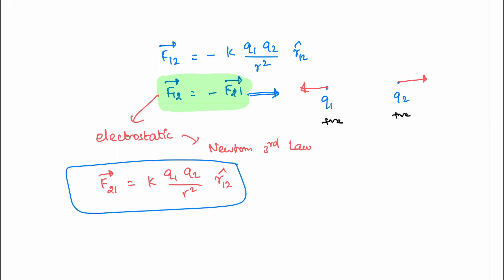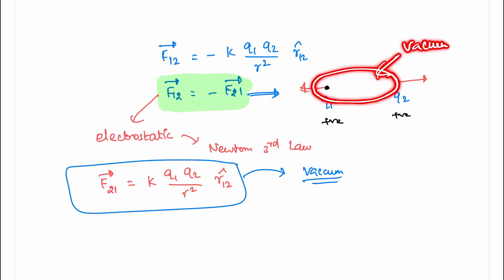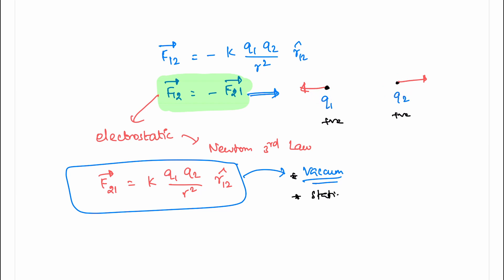This is Coulomb's law. Coulomb's law is valid for vacuum. What is vacuum? If I have charges Q1 and Q2 and there is empty space between them, that is a vacuum. Coulomb's law also applies to stationary point charges — it is valid for point charges. If you are using surface charge or linear charge density, you can treat them as point charges.